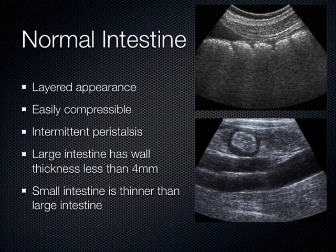Normal intestine has a layered appearance, is easily compressible, and should intermittently peristalse. Large intestine wall is less than 4 millimeters. Small intestine is somewhat thinner — less than 4 millimeters, probably closer to less than 3 millimeters, and definitely thinner than the large intestine.